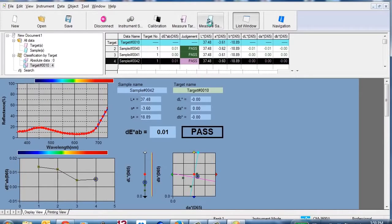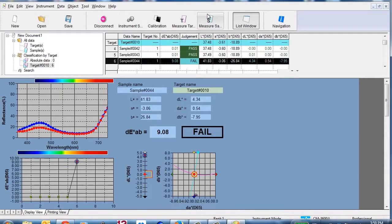SpectraMagic NX comes with predefined templates, or templates can be customized. Reports range from simple pass-fail to trend charts, histograms, color plots, and spectral graphs.